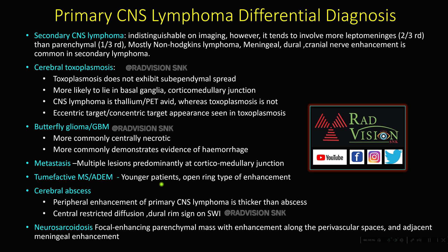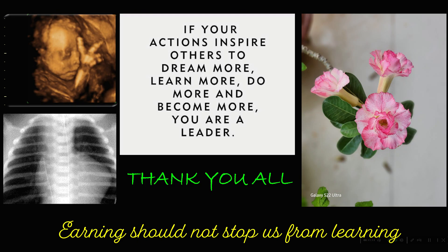Tumefactive MS or ADEM are seen in younger patients with open ring type of enhancement. Cerebral abscess shows peripheral enhancement; primary CNS lymphoma enhancement is thicker than abscess, restricted diffusion is seen in abscess, and the dual-rim sign is seen on SWI. Neurosarcoidosis can also mimic lymphoma, but there will be focal enhancing parenchymal mass with enhancement along perivascular spaces and adjacent meningeal enhancement.